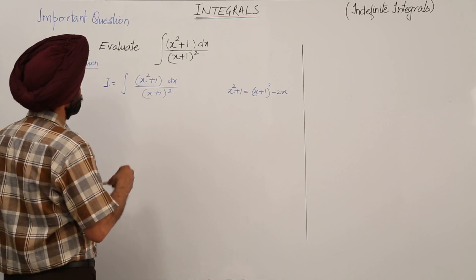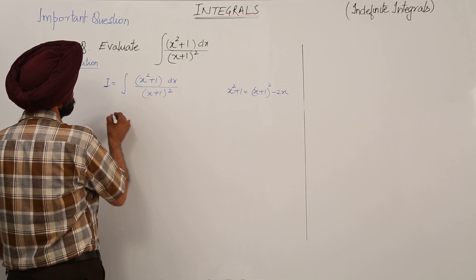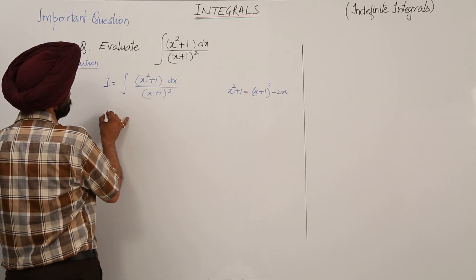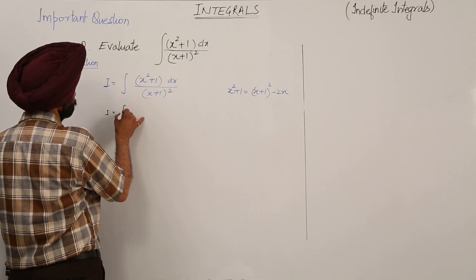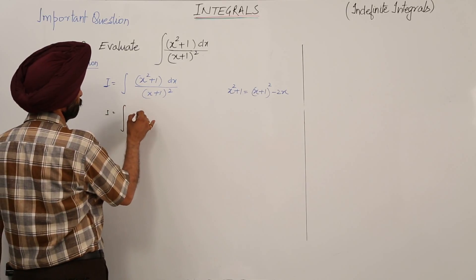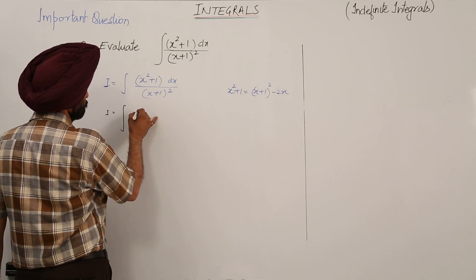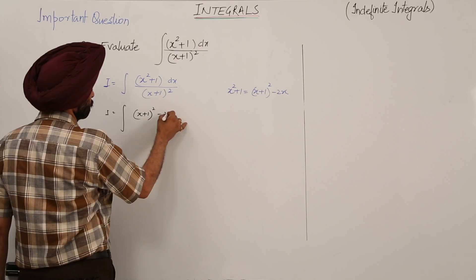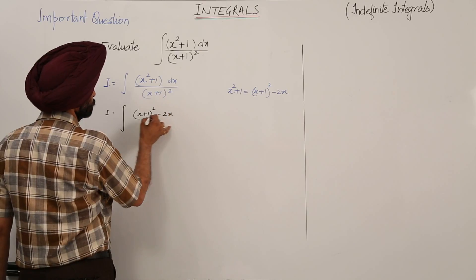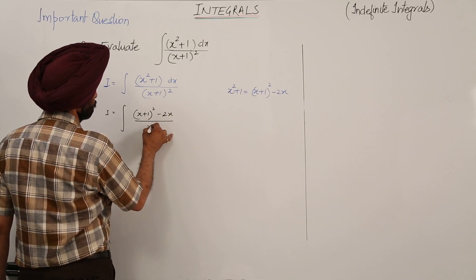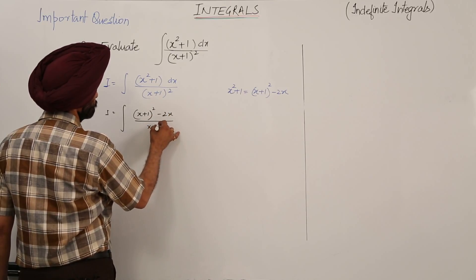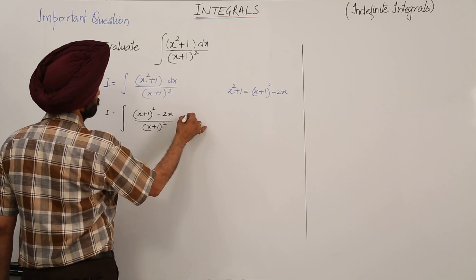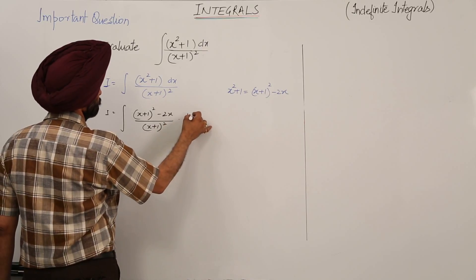So now the question becomes integration of [(x + 1)² minus 2x] upon (x + 1)², with dx.